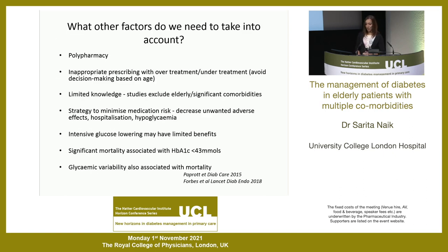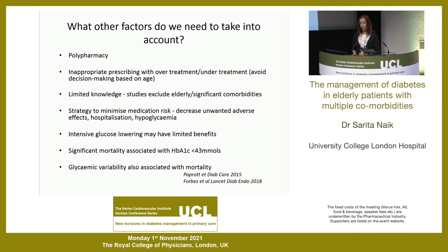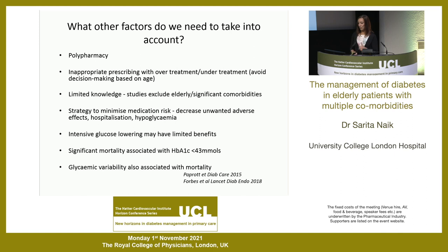Other factors to consider include polypharmacy — whether patients are taking too many medications or struggling to take them — inappropriate prescribing with over- or under-treatment, and avoiding decisions based purely on age. Most studies exclude the elderly or those with significant comorbidities; fewer than 2% include this population. We want to minimize medication risk, decrease adverse effects, reduce hospitalization, and avoid hypoglycemia. There is significant mortality with an HbA1c lower than 43 mmol/mol, and increased mortality with glycemic variability should also be avoided.